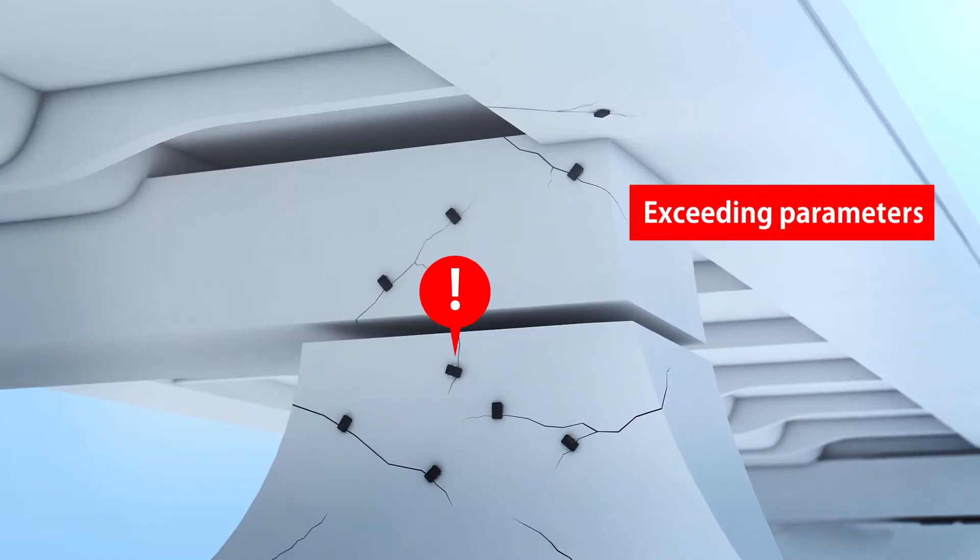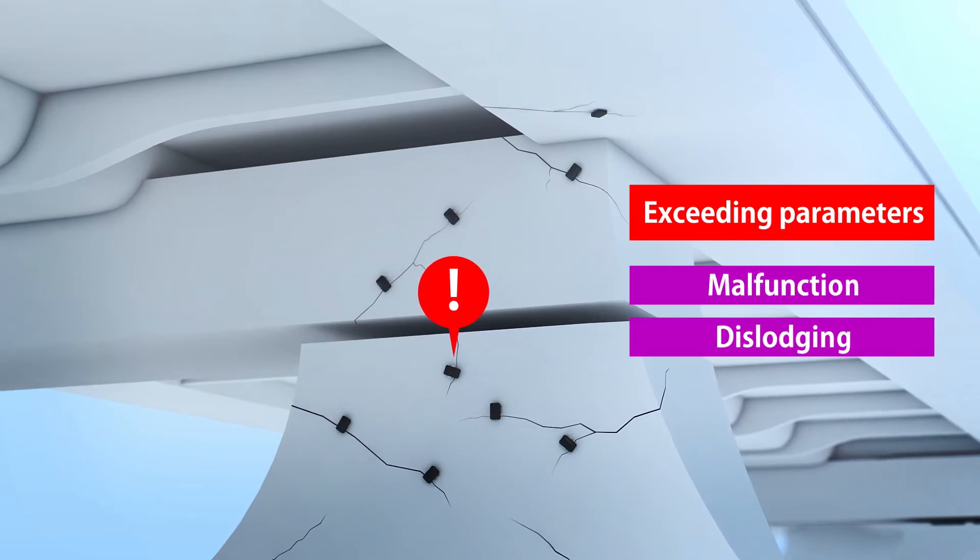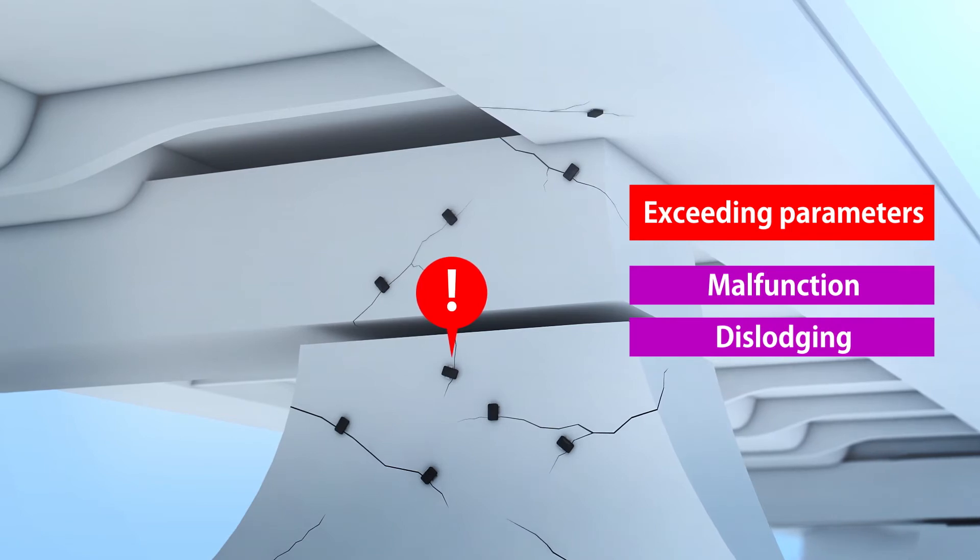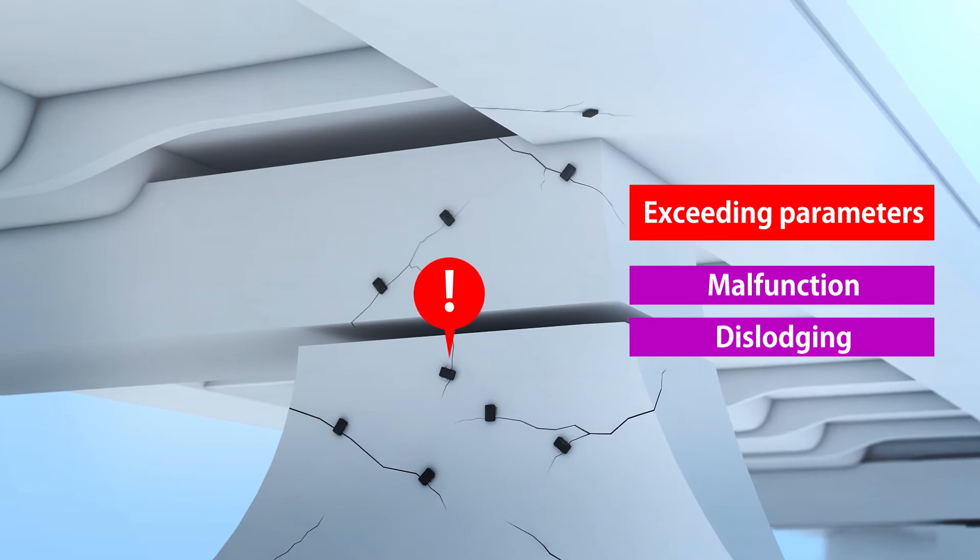With regular communication functions, the monitor can transmit the data of changes that exceed parameters and lets the center know when the monitor is malfunctioning or of any abnormalities, such as dislodging.